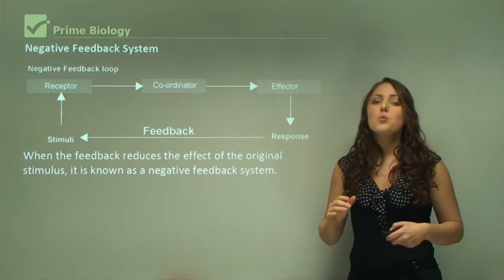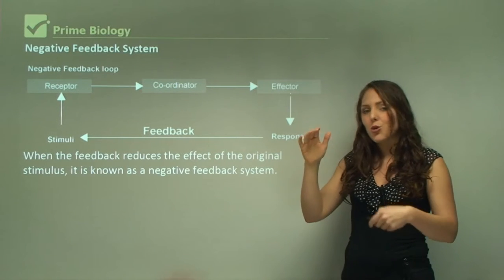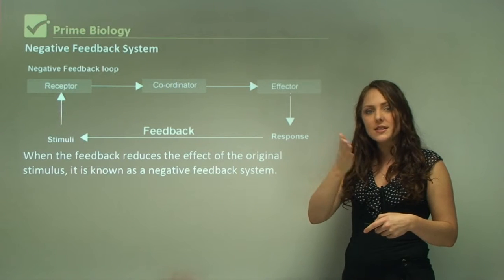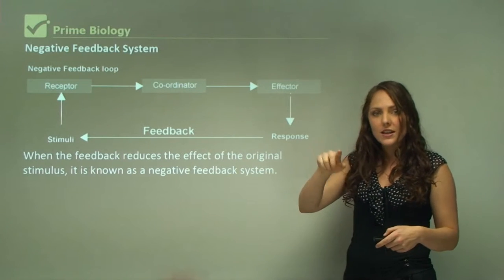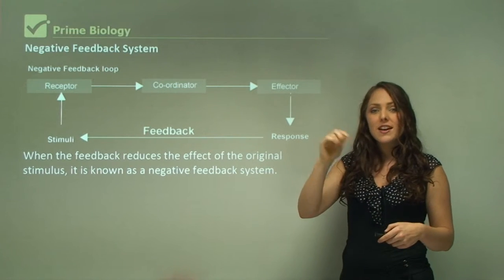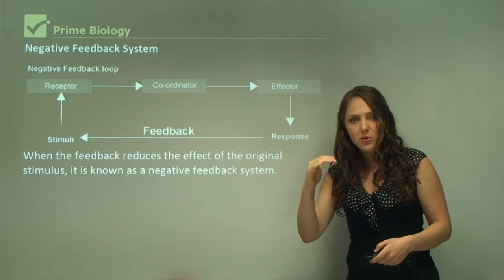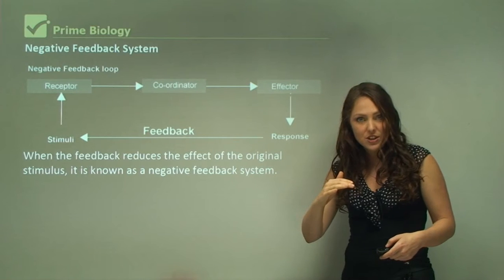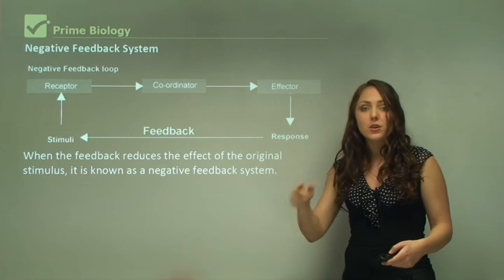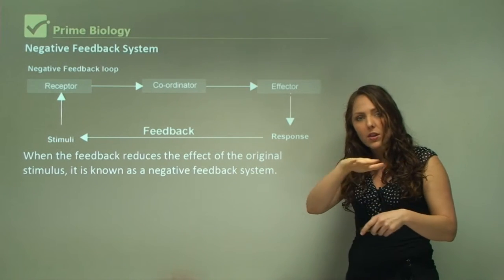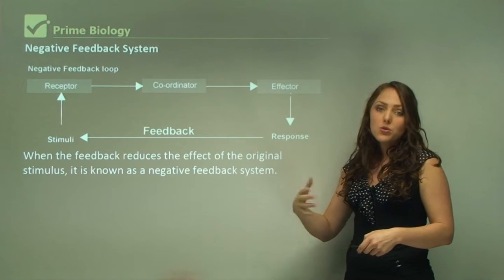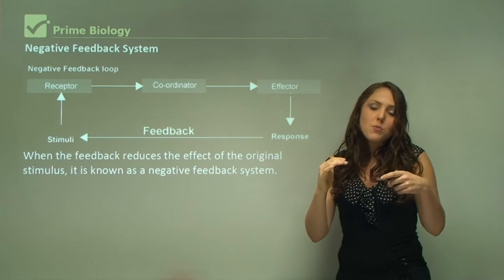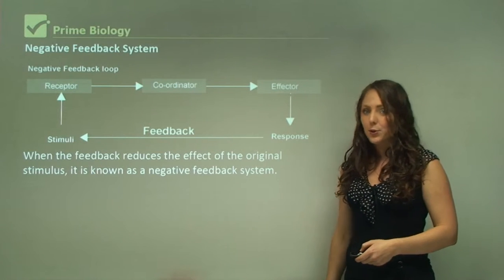When the feedback reduces the effect of the original stimulus, it is known as a negative feedback system. Whether your body temperature increases or decreases, both are negative feedback systems — they bring your body back to normal. Whether you increase or decrease in something, bringing it back to normal is called a negative feedback loop.